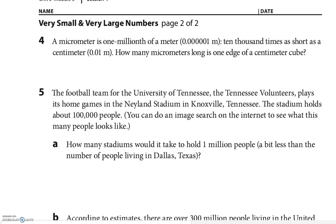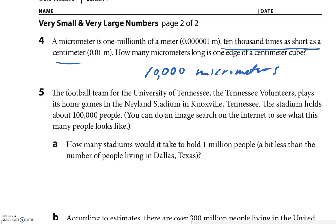This one's a little confusing in words, but once you look closer it's not bad. A micrometer is one millionth of a meter — ten thousand times as short as a centimeter. How many micrometers long is one edge of a centimeter cube? They told us it's ten thousand times as short as a centimeter, so there are ten thousand micrometers in one centimeter edge.